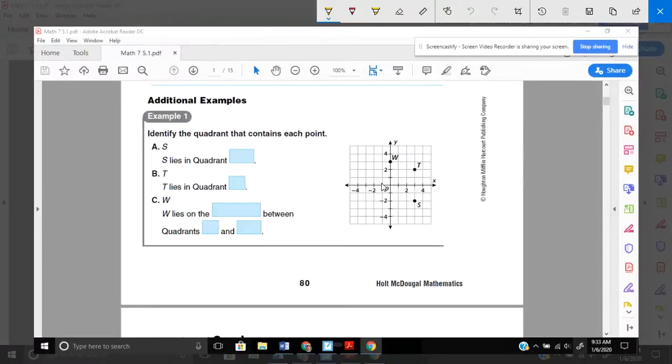Example one says identify the quadrant that contains each point. So for letter A, it wants us to look at S. Here is S. And it wants us to tell what quadrant that is in. Well, remember, make the letter C. Quadrant one, quadrant two, quadrant three, quadrant number four. So IV quadrant four is where S is.